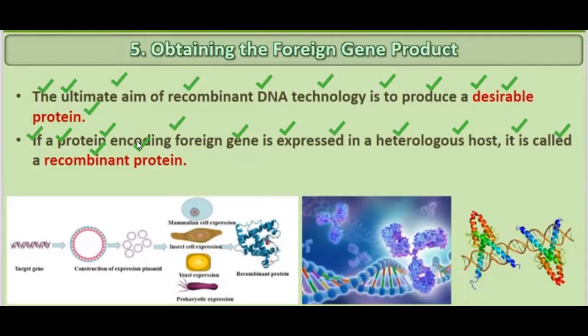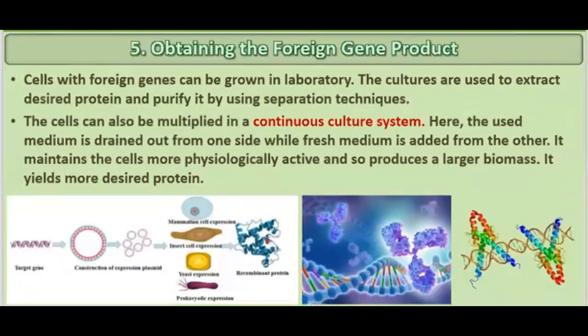There is a gene that undergoes transcription and translation, ultimately making up the protein. If a protein is made outside its natural environment — in vitro or in another host — we call that a recombinant protein. Cells with foreign genes can be grown in the laboratory, and the cultures are used to extract and purify the desired protein using separation techniques.